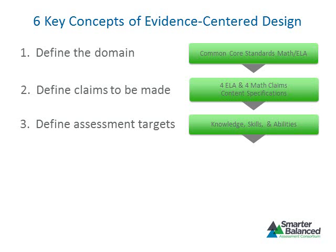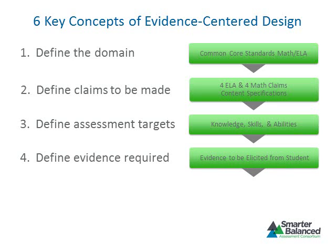Once assessment targets are defined, the fourth step focuses on identifying the types of information that need to be collected from students to allow educators to say something meaningful about the student's achievement of the assessment targets. The information Smarter Balanced aims to elicit from students is considered to be evidence that can be used to support or refute a claim about the student's achievement of the assessment target.